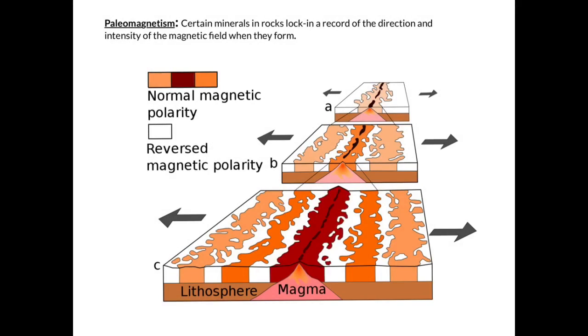The way that we can actually explain seafloor spreading, because we can't live for millions of years to witness it firsthand, is through the concept of paleomagnetism, which means that certain minerals in rocks lock in a record of the direction and intensity of the magnetic field from which they form.